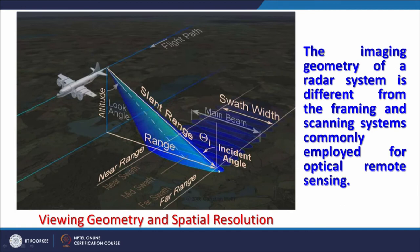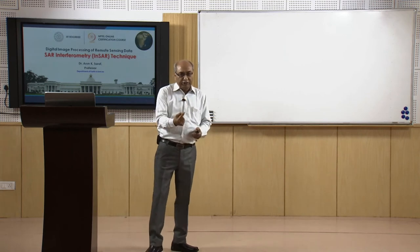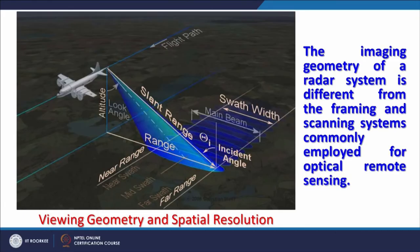Considering the flight path, the slant range is the direct distance from the sensor to the target, while the range on the horizontal plane and the altitude form a triangle. The incident angle defines the geometry, and the main beam coverage area is called the swath width. We also refer to far range and near range. The imaging geometry of a radar system is different from the framing and scanning systems commonly used in optical remote sensing — here each pixel is a complex number having both amplitude and phase information.